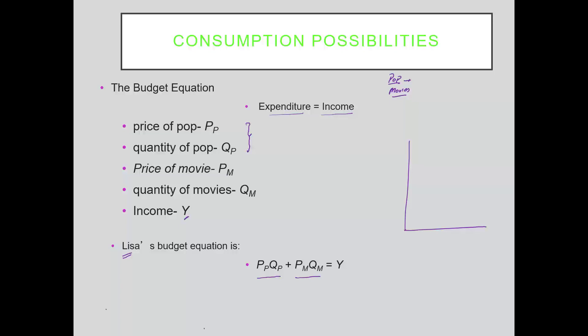We want to draw this equation: on the y-axis, measure the quantity of drinks (pop); on the x-axis, measure the quantity of movies. Income is forty dollars, price of movies is eight dollars, and price of drinks is four dollars. If Lisa spends all her money on movies, she can buy forty divided by eight — five movies. If she spends all on drinks, forty divided by four gives her ten drinks. Given these two intercept points, we can draw the budget constraint as a straight line.